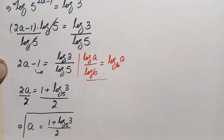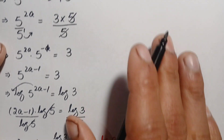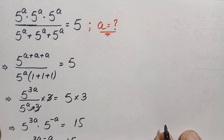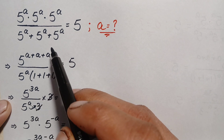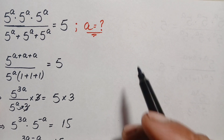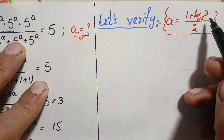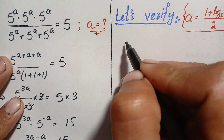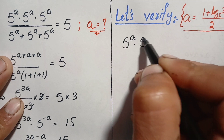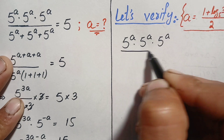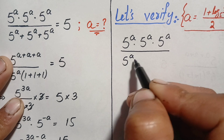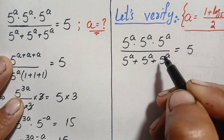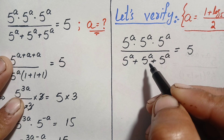So this is our final answer: a equals 1 plus log base 5 of 3, divided by 2. Now we will verify this value of a is the exact and correct value for this problem. We write the original problem again: 5 raised to power a times 5 raised to power a times 5 raised to power a, divided by 5 raised to power a plus 5 raised to power a plus 5 raised to power a, equals 5. Before substituting, we simplify the left hand side first.